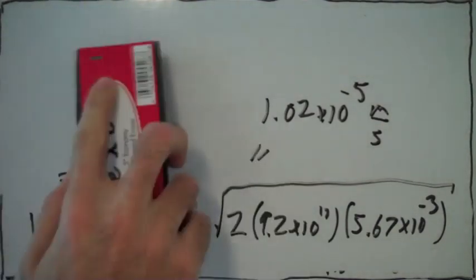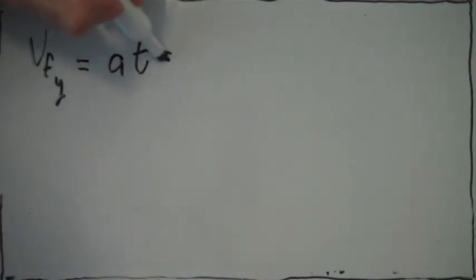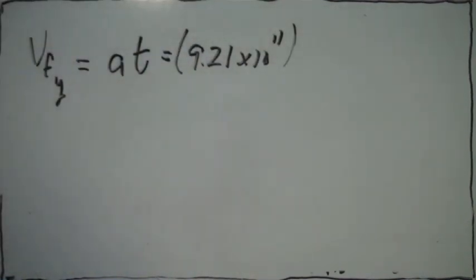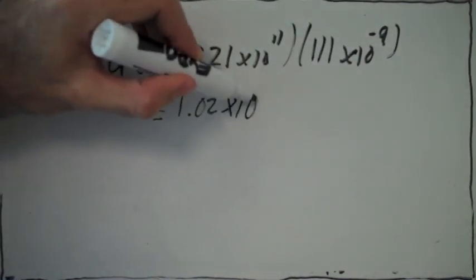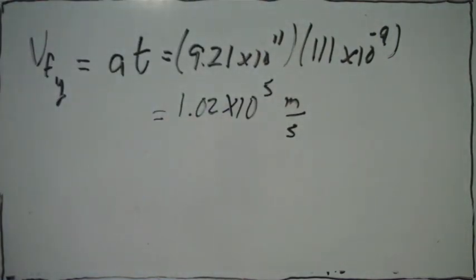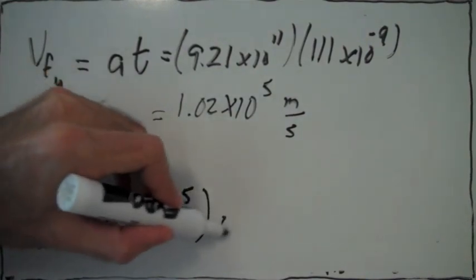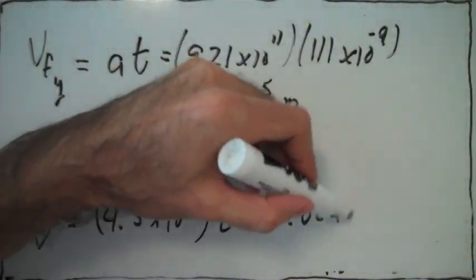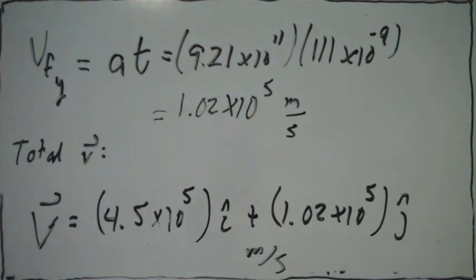Another way to calculate the final velocity in the y direction is simply by saying the final velocity in y equals the acceleration in y times the time it moved. We already know the acceleration in y and the time from before, so we calculate and get the same number — confirming the final velocity in y. The total velocity is then given by combining the x component, which was always constant, and the y component we just calculated, giving us a total velocity in meters per second.